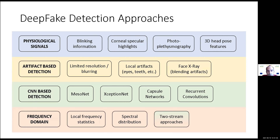There are other methods that try to detect artifacts like blurry areas around ears or mouth. There are methods that are purely deep learning based — the so-called CNN, convolutional neural network based approaches — like Mesonet, Xceptionet, and so forth. And methods relying on spectral analysis in the frequency domain. Our approach in WeVerify belongs to the third category: CNN-based approach.